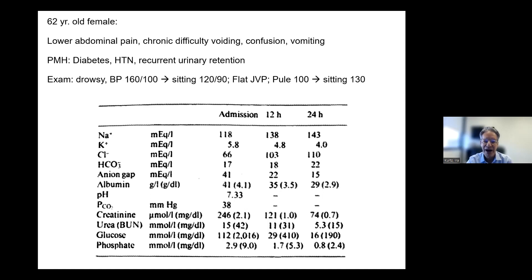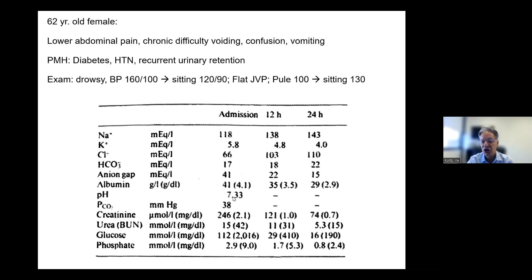So the anion gap would be decreased in metabolic acidosis or respiratory acidosis, because the proton protonates albumin and lowers its charge. Similarly, when you alkalinize the blood, you deprotonate albumin and the negative charge increases. So in metabolic alkalosis and respiratory alkalosis, independent of everything else, the anion gap is increased. There are algorithms to quantify how much the anion gap should change for a given pH change.